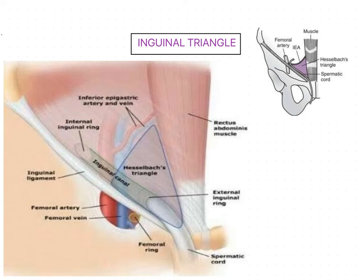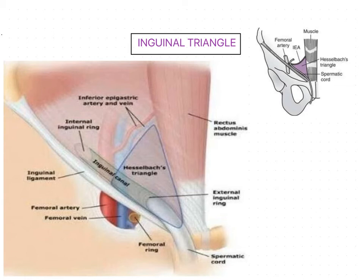Welcome back. In the previous session we have seen the inguinal canal. Now we are going to see another structure related to the anterior abdominal wall — the inguinal triangle. This inguinal triangle is also known as the medial inguinal fossa, and it was first described by Frank Hesselbach, a German surgeon and anatomist, in 1806. So this inguinal triangle is also called Hesselbach's triangle.